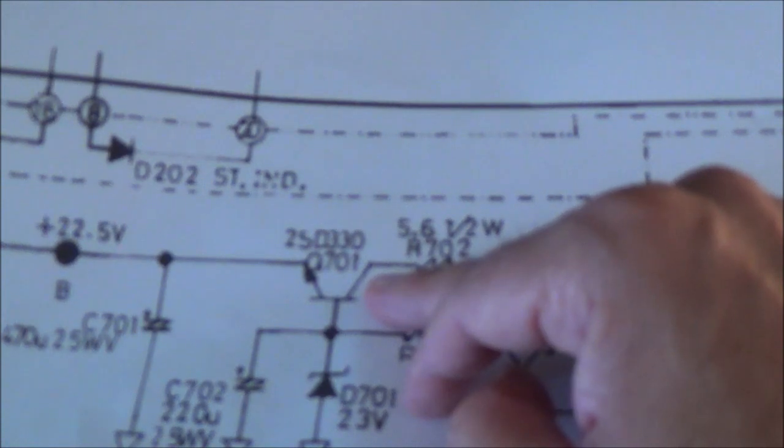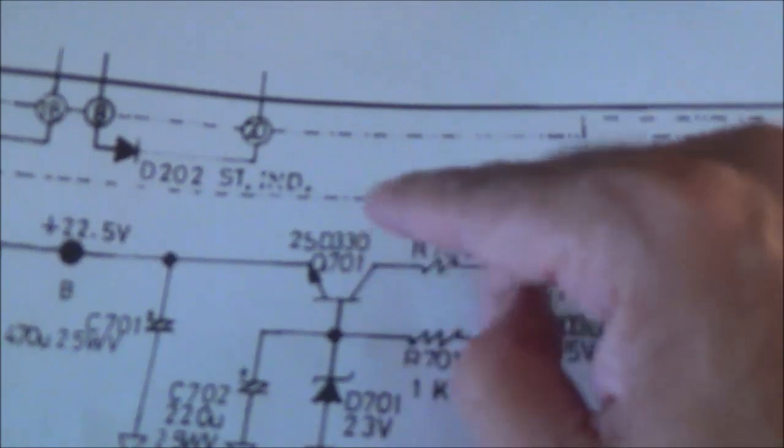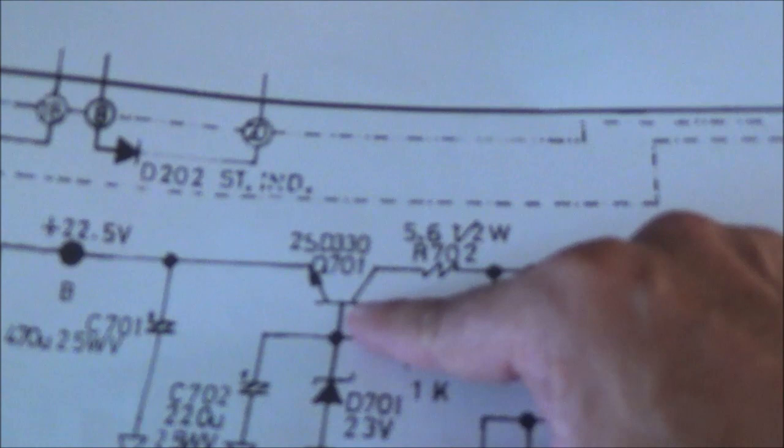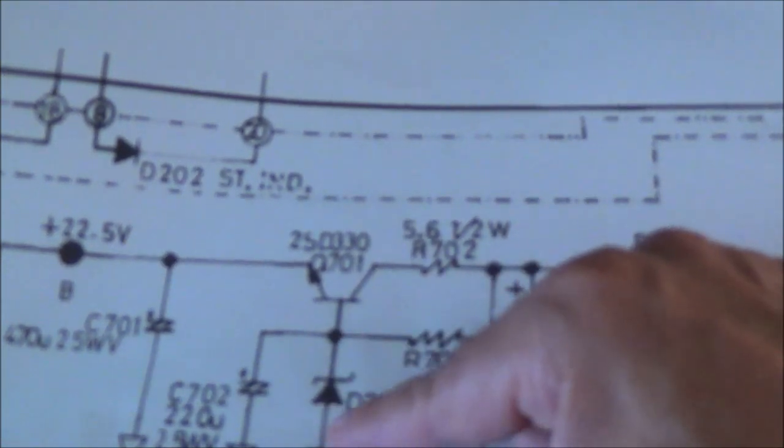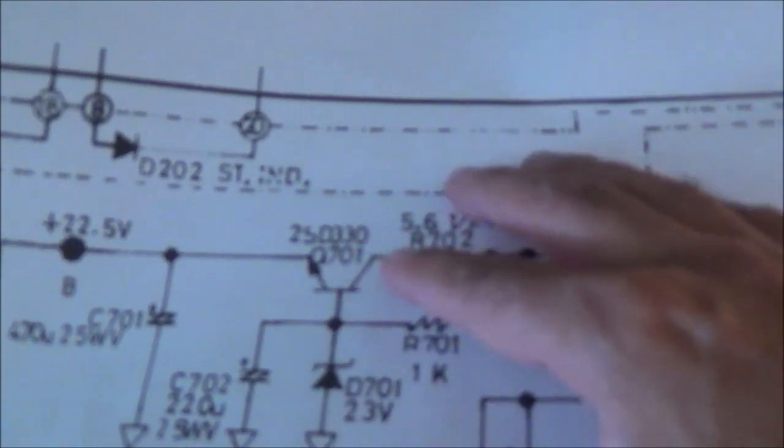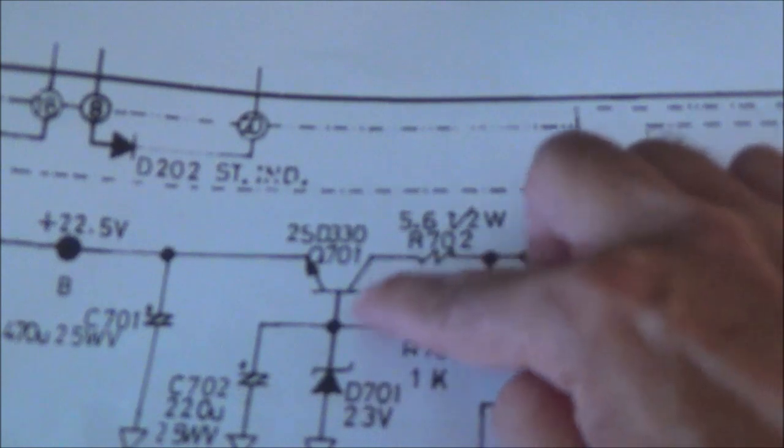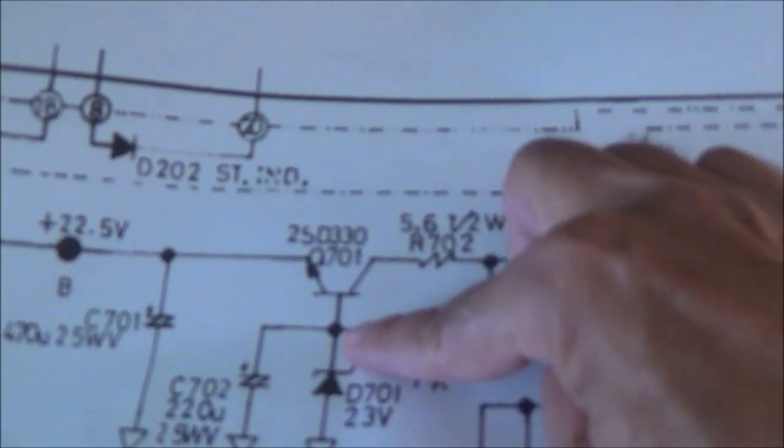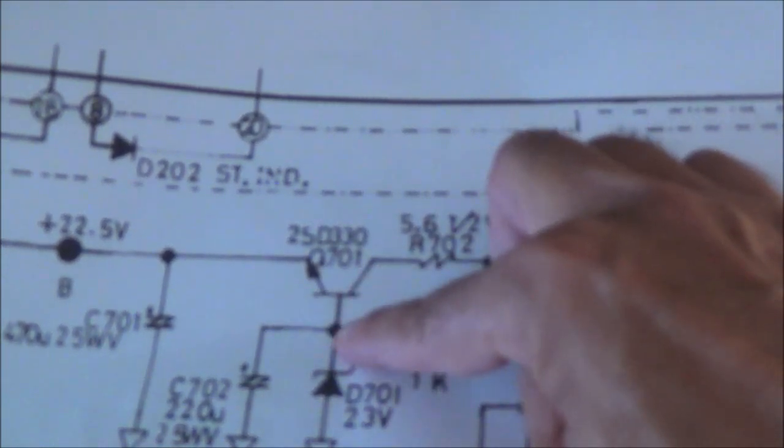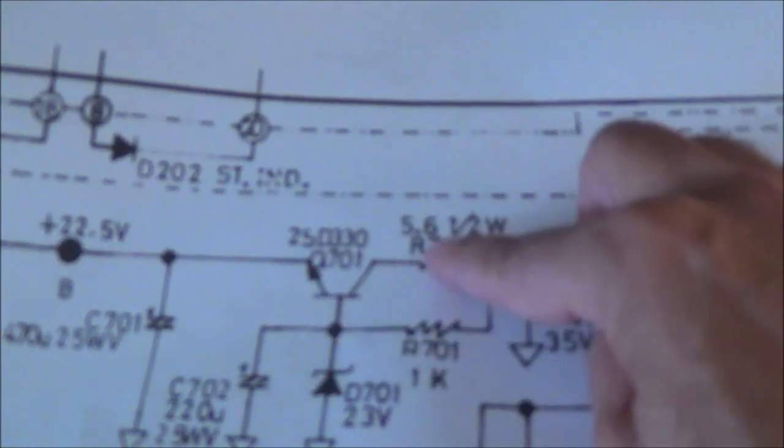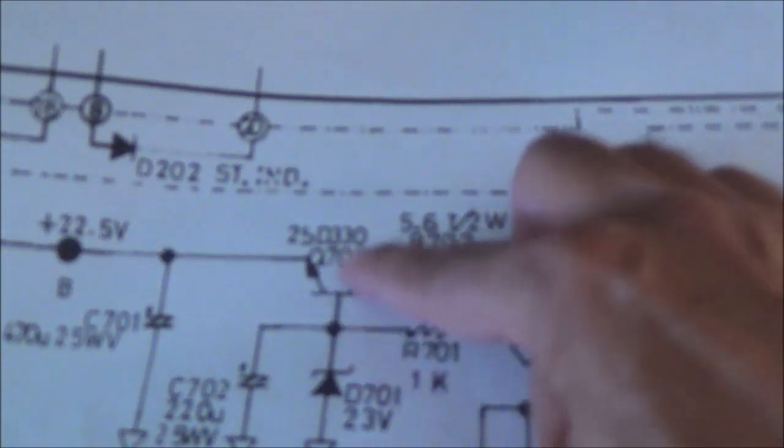Basically you'll see this a lot of times: the base will be hooked up to the Zener diode. Of course the Zener diode is always hooked up the opposite way than the normal diode is. Here where I'm pointing at, that's of course the cathode, and here the cathode is connected to positive. This is an NPN transistor.